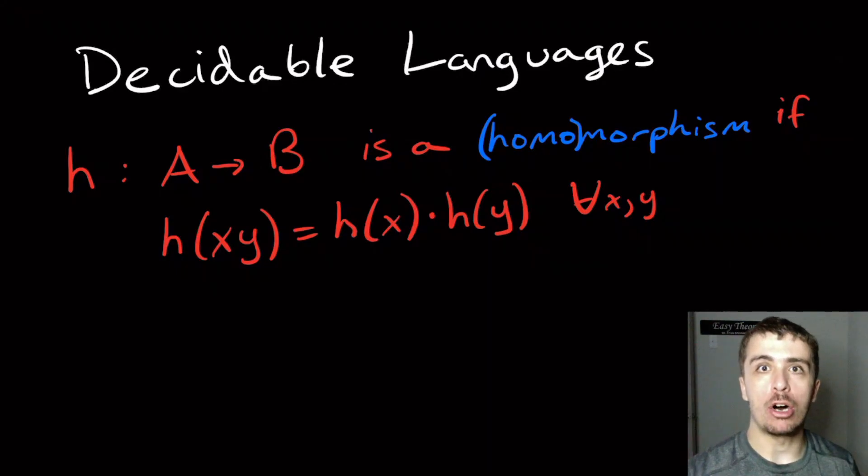So recall that a homomorphism between two sets A and B, inputs in some set A and outputs in set B, it's a homomorphism if you can separate out the strings that are in A. So for example, if you have two strings X and Y, and we wanted to apply H to it, so X and Y, the concatenation is some string in A.